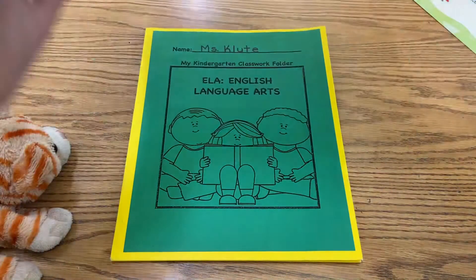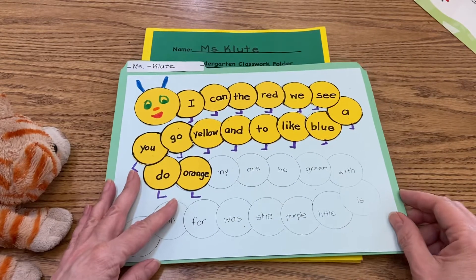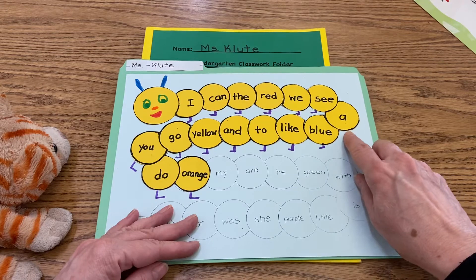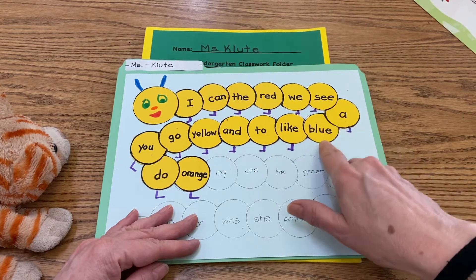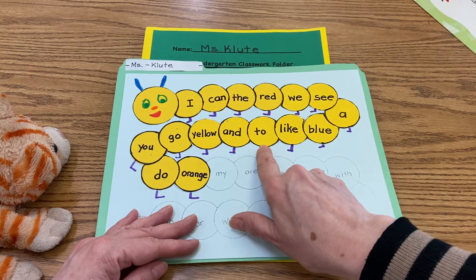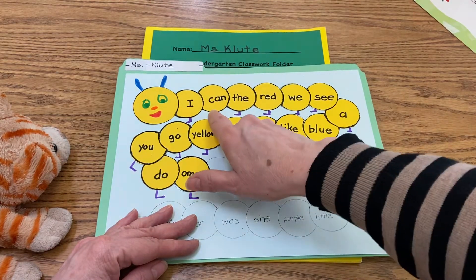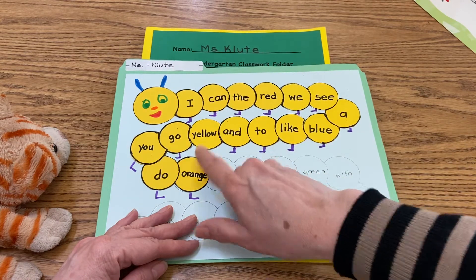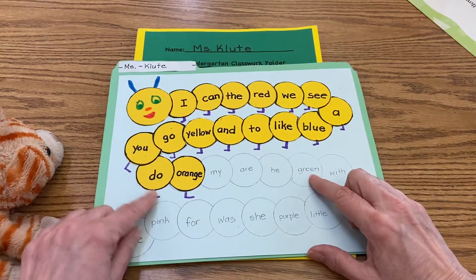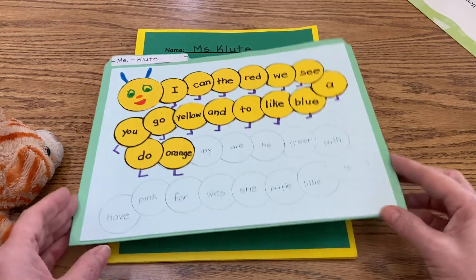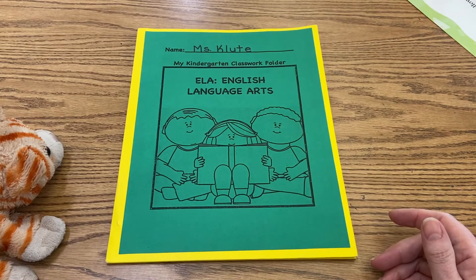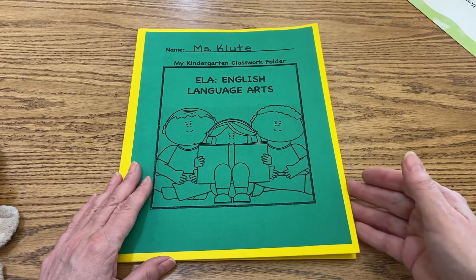Let's begin by reading our sight word caterpillar, and I'm going to mix this up a little bit today and read it kind of randomly. See if you can follow me: A, C, blue, we, like, red, to, the, and can, yellow, orange, go, I, you, do. How'd you do with that? It's good to practice them out of order, so it helps you become better at memorizing your sight words.